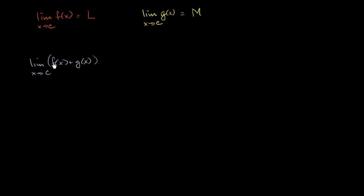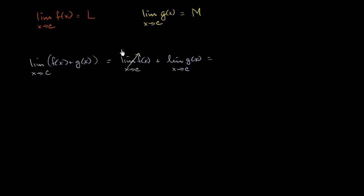You could look at this visually — if you look at the graphs of two arbitrary functions, you would essentially just add those two functions. This is going to be equal to the limit of f of x as x approaches c, plus the limit of g of x as x approaches c, which equals L plus M. This is often called the sum rule or the sum property of limits.